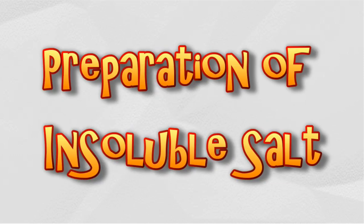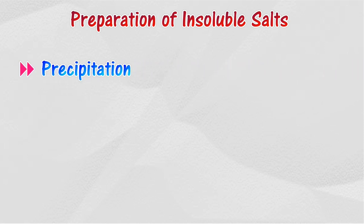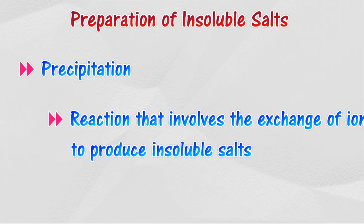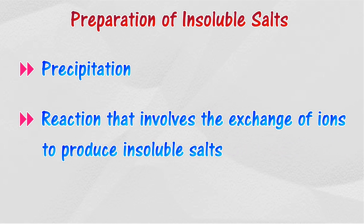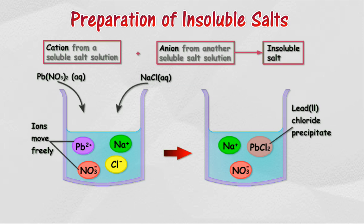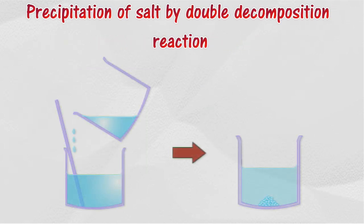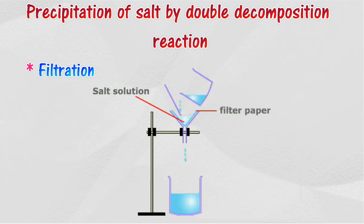Preparation of insoluble salts. Insoluble salts are prepared through precipitation reactions, also called double dissociation reactions. A precipitation reaction involves the exchange of ions to produce insoluble salts by mixing two aqueous solutions containing the ions of the insoluble salt. Both compounds used to form the mixture must be soluble salts so that free-moving ions can react to form the insoluble salt.